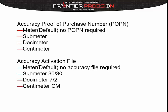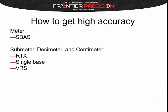The activation file you'll need depends on which unit you have. If you have the sub-meter unit you'll get the 3030 file, if you have the decimeter you'll get the 720, and if you have a centimeter unit you'll get the centimeter file. For a meter unit to achieve spec accuracy, you just need SBAS. For sub-meter, decimeter, or centimeter, you'll need a real-time source such as RTX, a single base, or VRS.